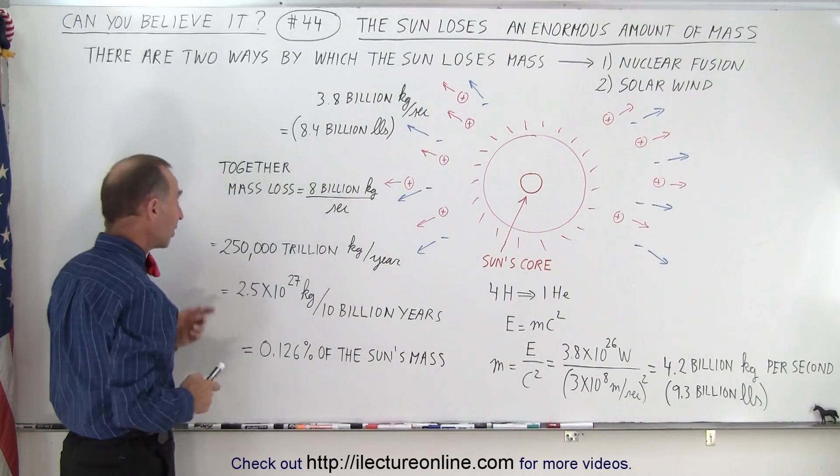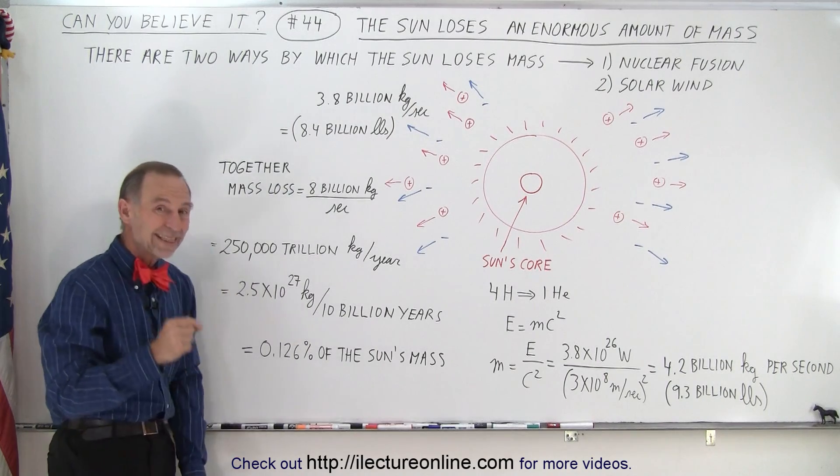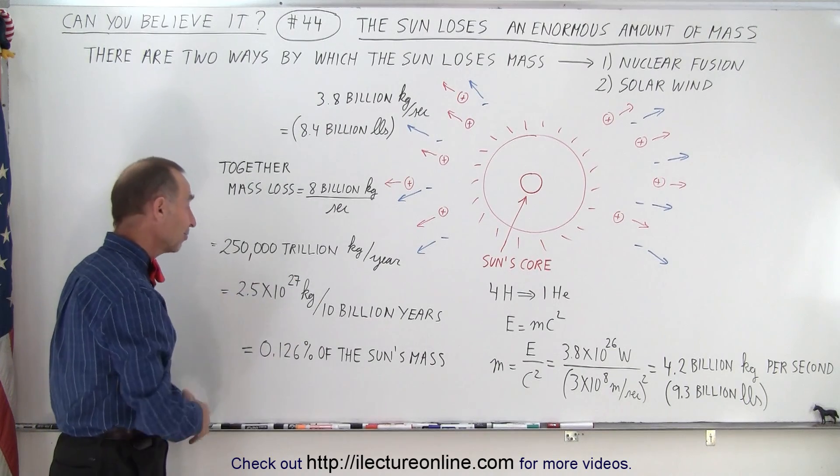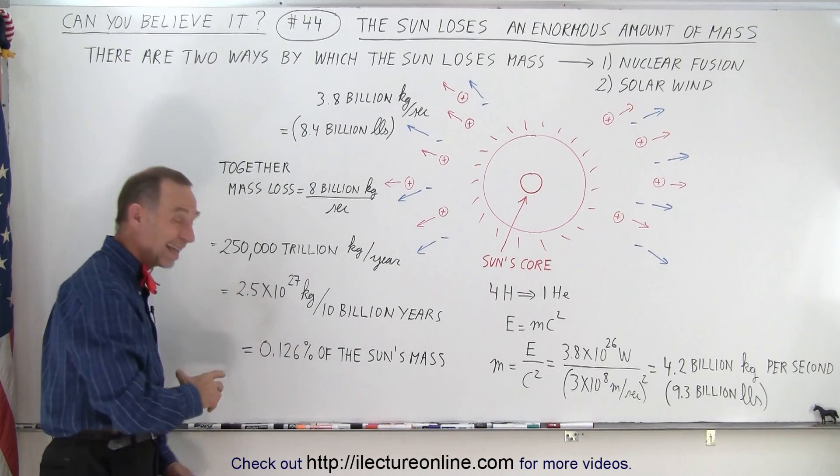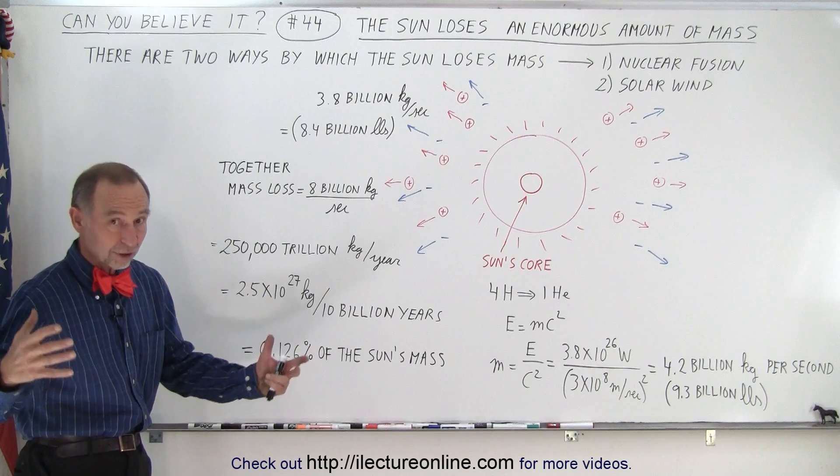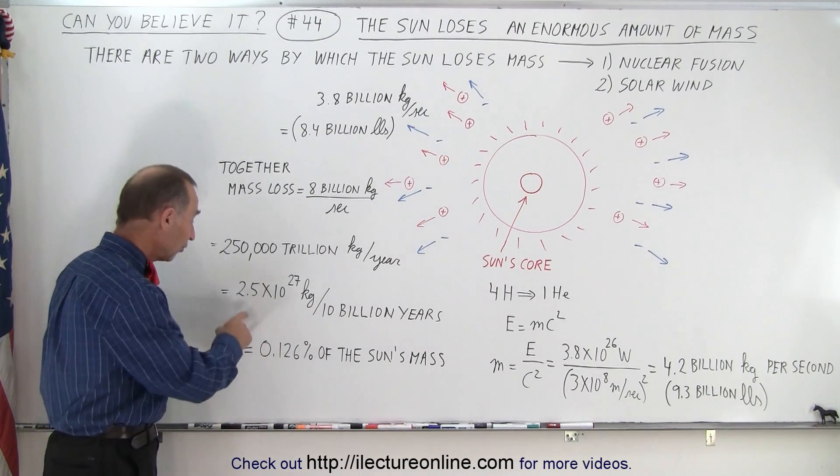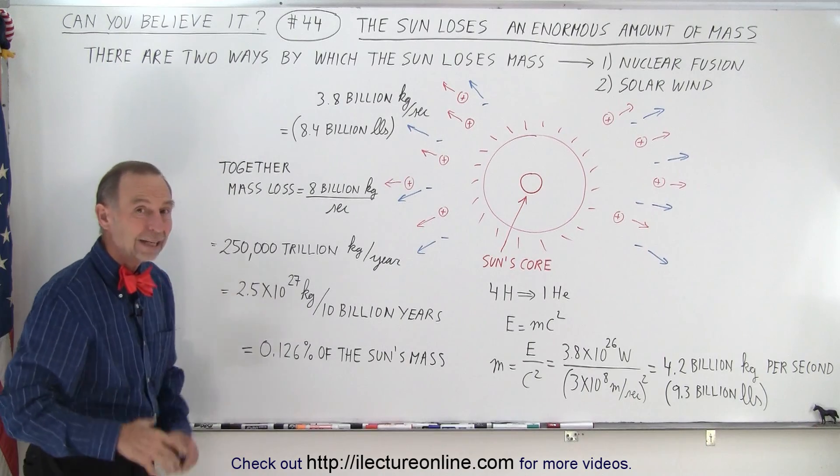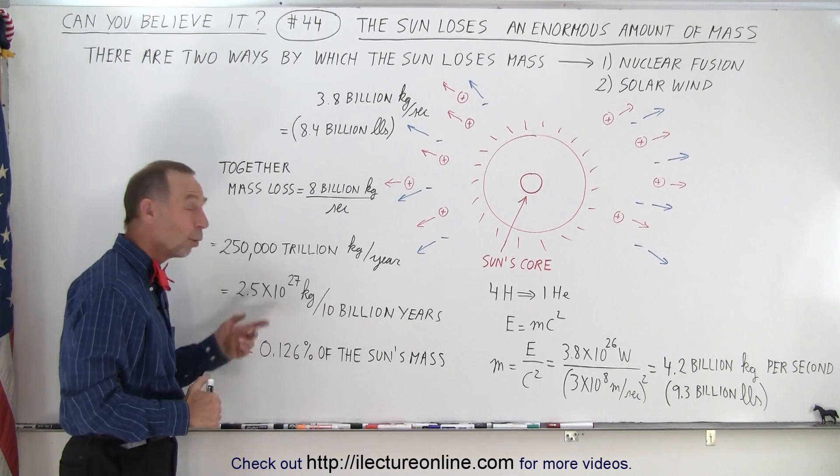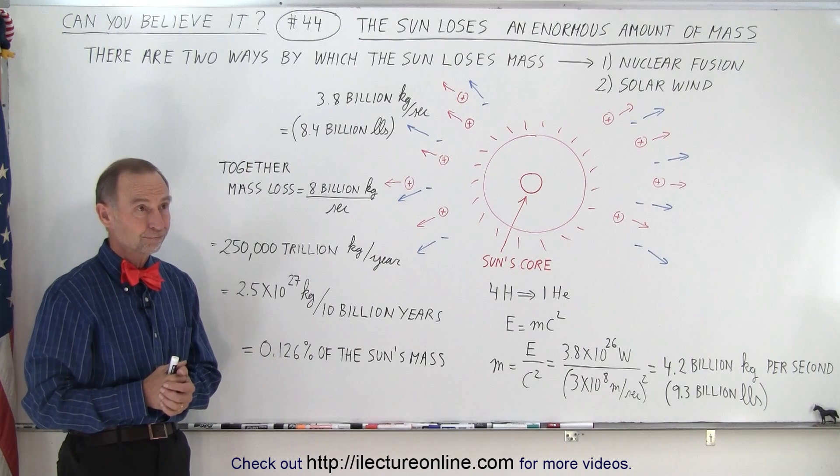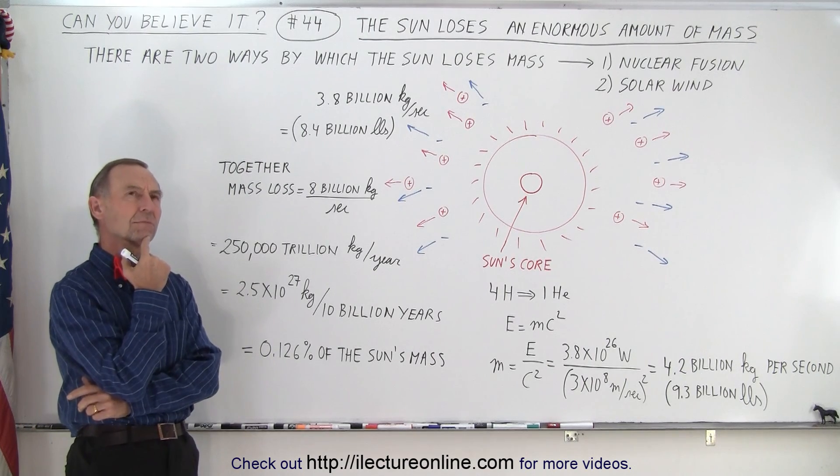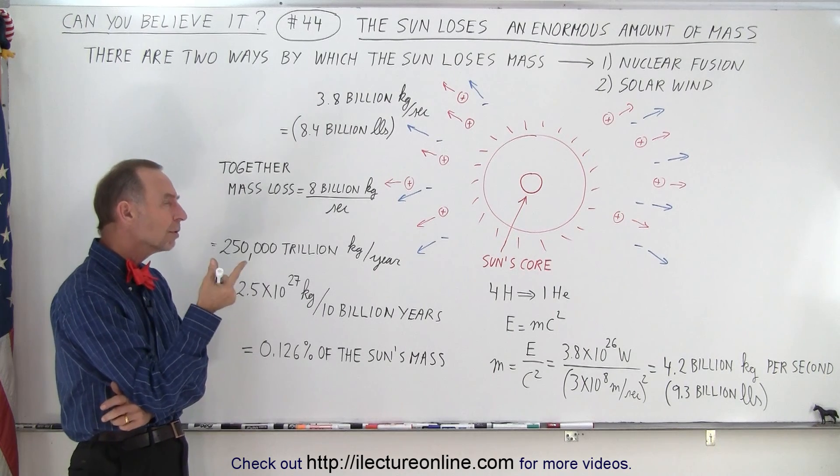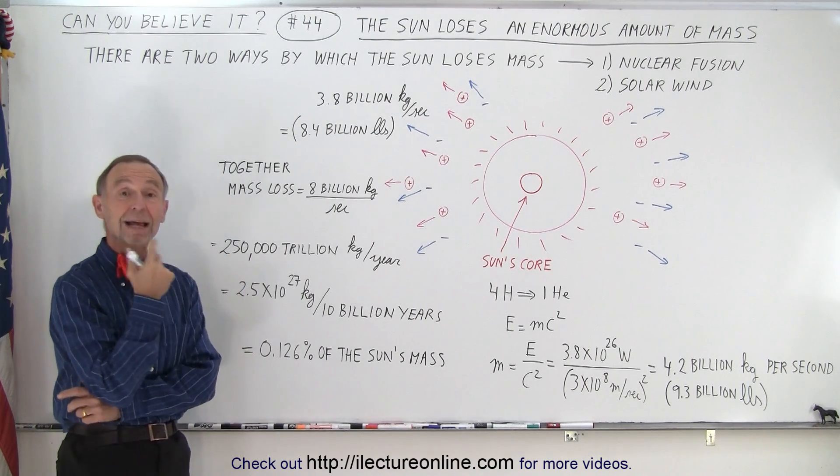8 billion kilograms per second turns out to be 250,000 trillion kilograms in a single year. And if you then multiply that times 10 billion years, because we want the sun to last for 10 billion years, that's 2.5 times 10 to the 27 kilograms in the time span of 10 billion years. That's a whole lot more than the mass of the earth. That's like 500 times the mass of the earth.